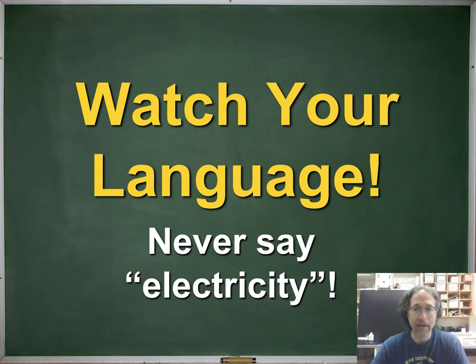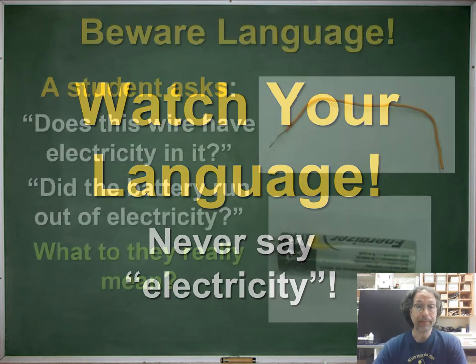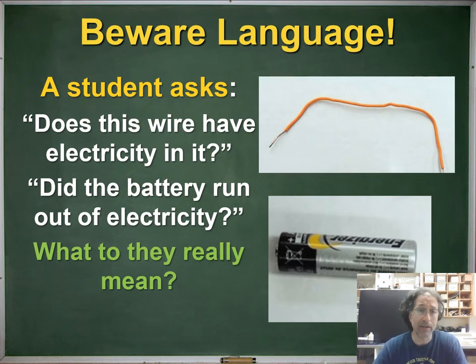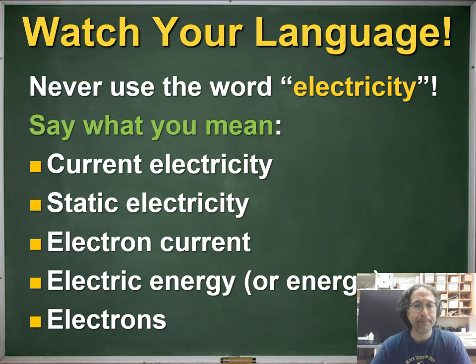Now let's start by talking about our language because we want to be very clear when we use scientific ideas to describe electricity. And so we will almost never say that word by itself, electricity. So our goal is to always be specific because we'll hear students ask questions like does this wire have electricity in it when it's not connected to anything? Or did the battery run out of electricity? And what do they really mean by these questions? So instead of just using the plain word electricity, let's always be specific. So we'll say current electricity or maybe just current. We'll say static electricity, electron current, electric energy or energy or electrons depending on what we're focusing on. So be very careful about just using the word electricity which is a very general concept and really represents a grab bag of ideas.